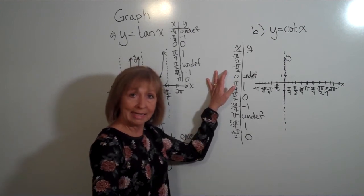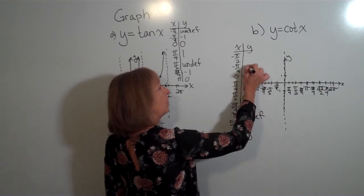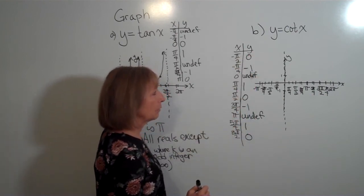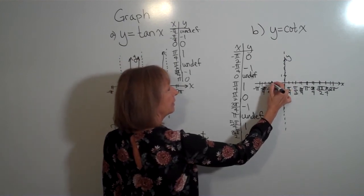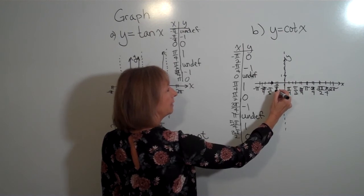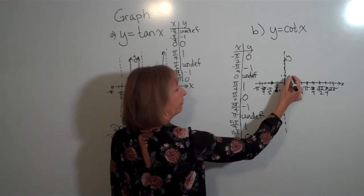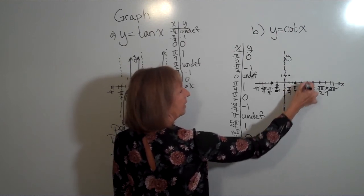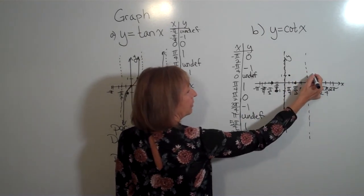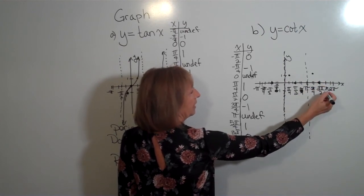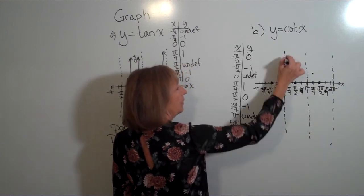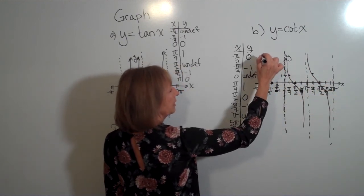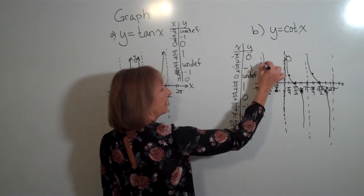At negative pi over 4, a fourth quadrant angle, the cotangent is negative 1. At negative pi over 2, the cotangent is 0. So graphing these: at negative pi over 2 it's 0, at negative pi over 4 it's negative 1, at 0 it's undefined, at pi over 4 we get 1, at pi over 2 we get 0, at 3 pi over 4 it's negative 1, at pi it's undefined, at 5 pi over 4 it's 1, and at 3 pi over 2 it's 0. Continuing on, the graph of y equals cotangent of x looks like this.